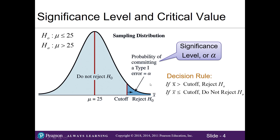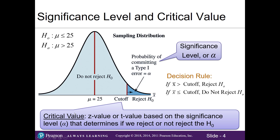The chosen alpha has a corresponding cutoff point known as the critical value. You can see the relationship where alpha is the shaded area and the cutoff is where that alpha begins. The critical value is the Z or T value based on the significance level that determines whether or not we reject the null. The Z value is used when we know the population standard deviation and the T value is used when we don't.